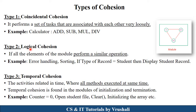The next type is logical cohesion. Logical cohesion means all the elements of the module perform similar types of operations. For example, in a module with three classes, those classes perform similar operations like error handling, sorting, searching, or if-else conditions — such as: if the type of record is student, then display the student record. All these similar functionalities are called logical cohesion.